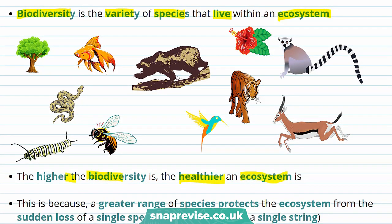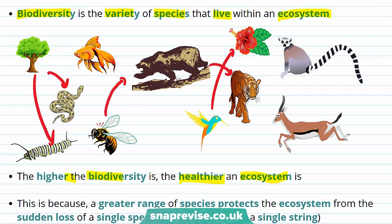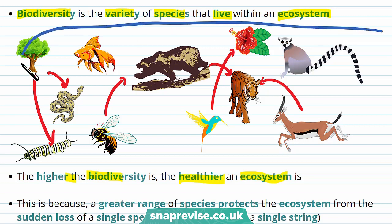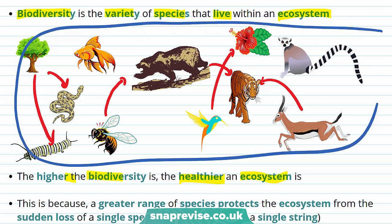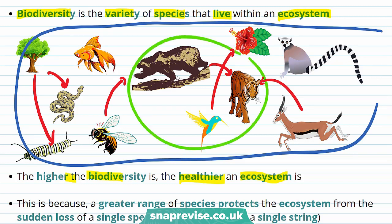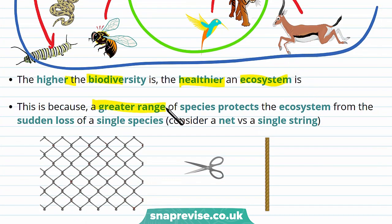This is because the more species there are, the more connections and interactions there are. This makes the ecosystem more stable. For example, an ecosystem containing all of these animals will probably be more stable and healthy than an ecosystem with just a couple of them, because a greater range of species protects an ecosystem from a sudden loss of a single species.